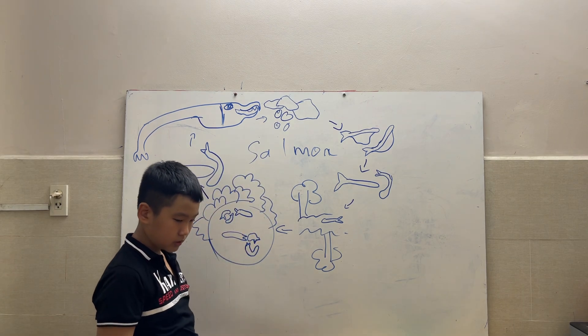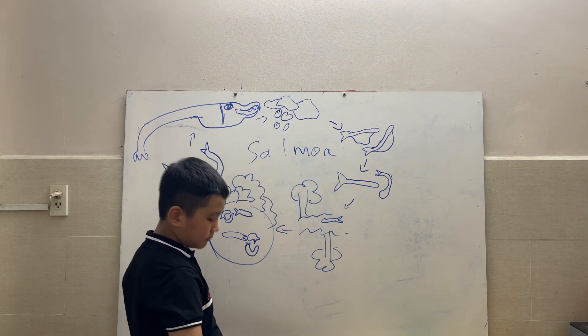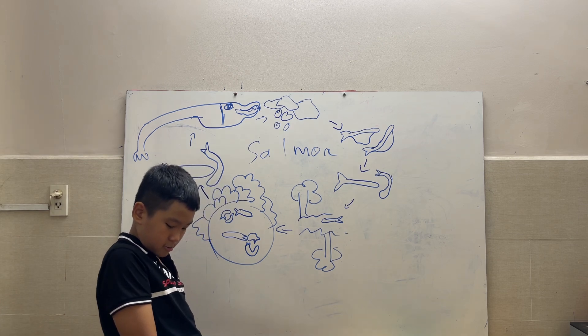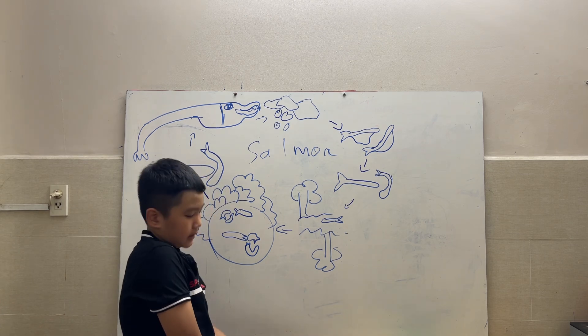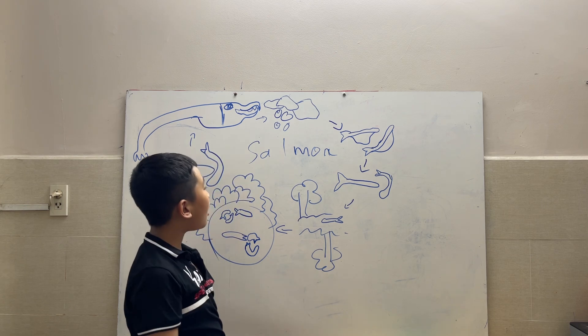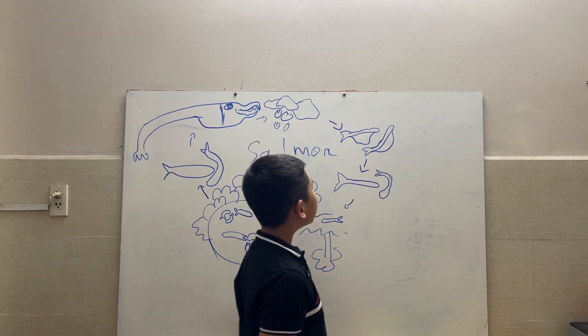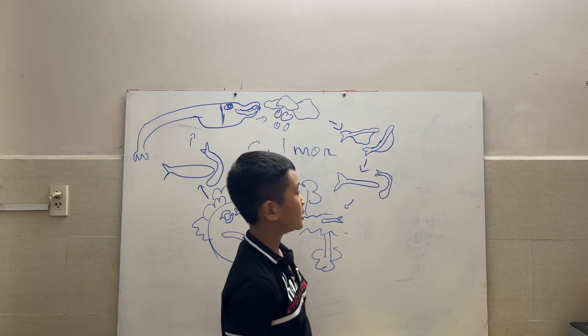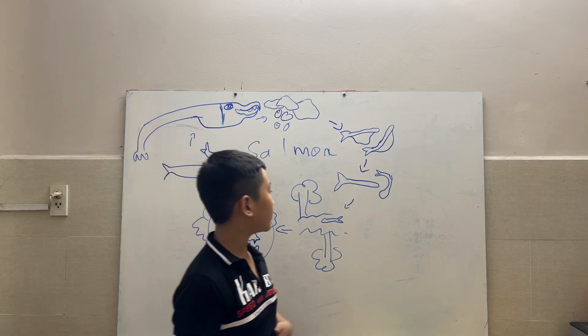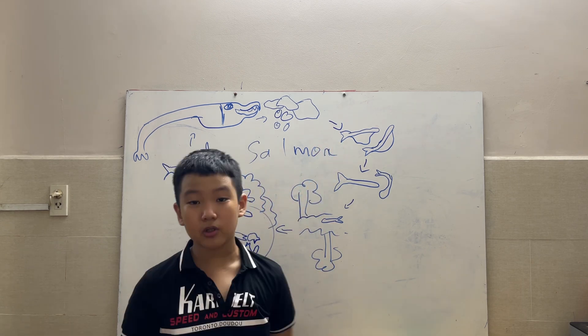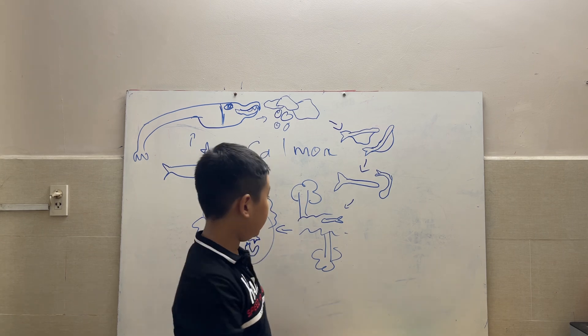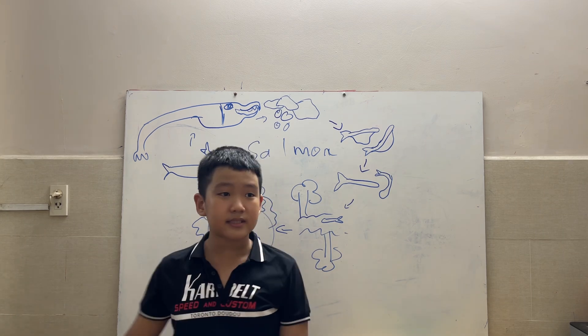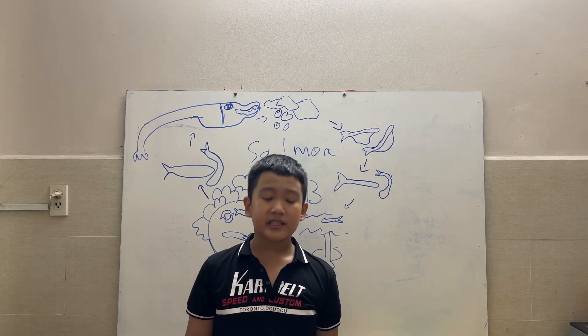Second of all, when the female dies, the babies finally hatch with the yolk under their bodies. This is a bag of yolk. They do not leave the safety of the gravel until they use up their yolk.